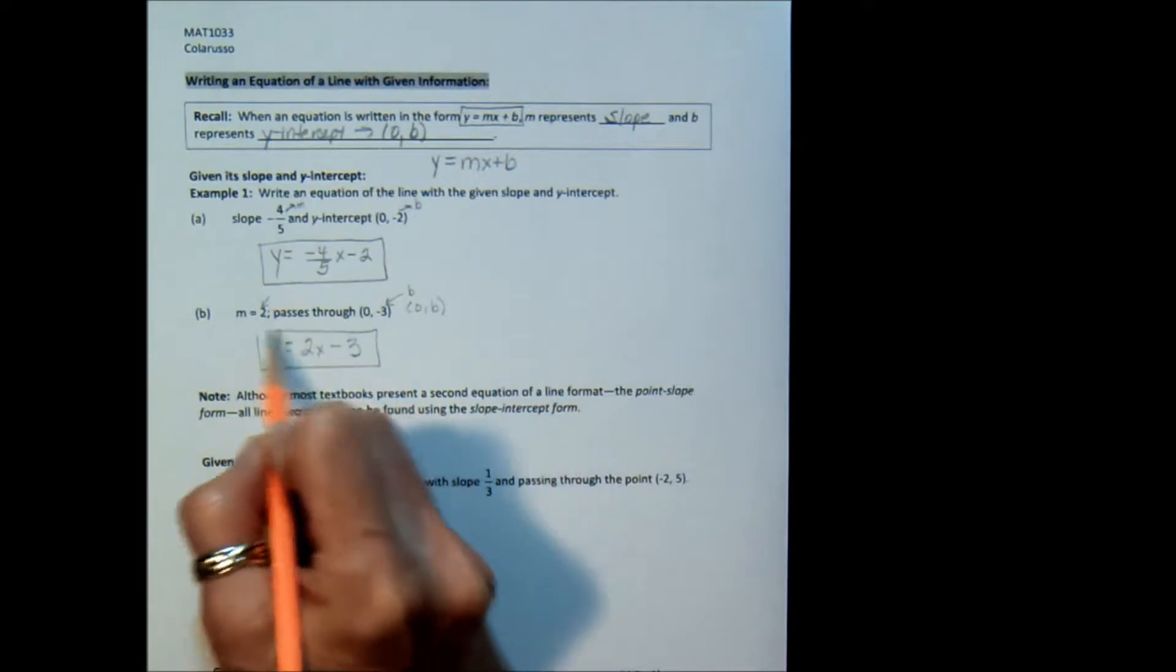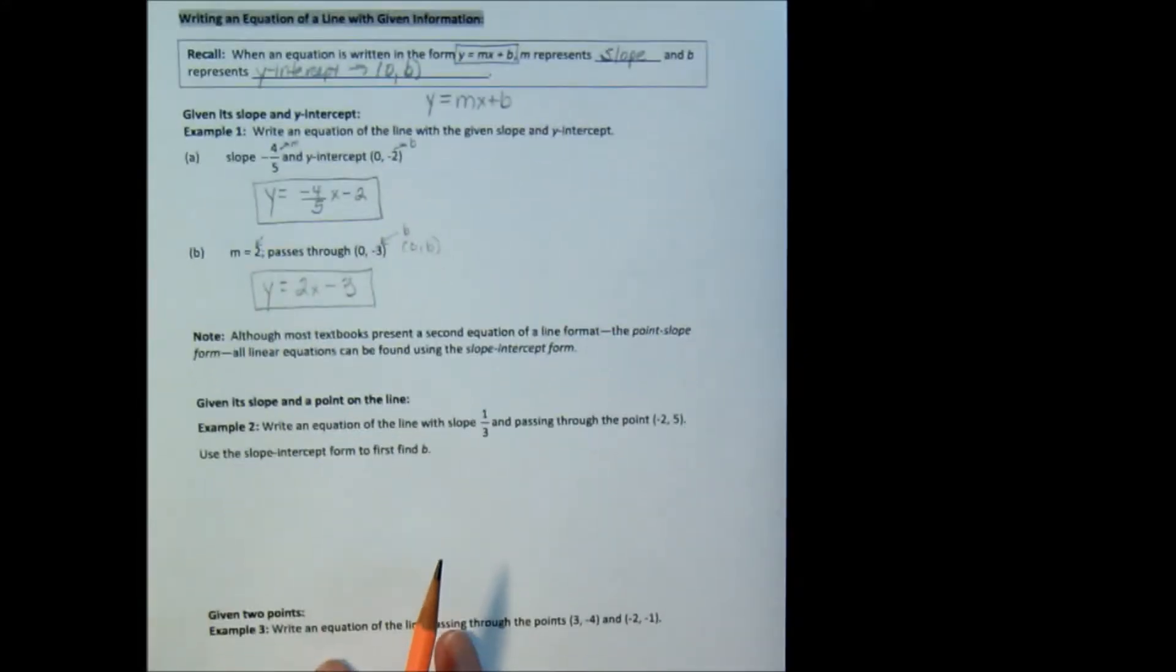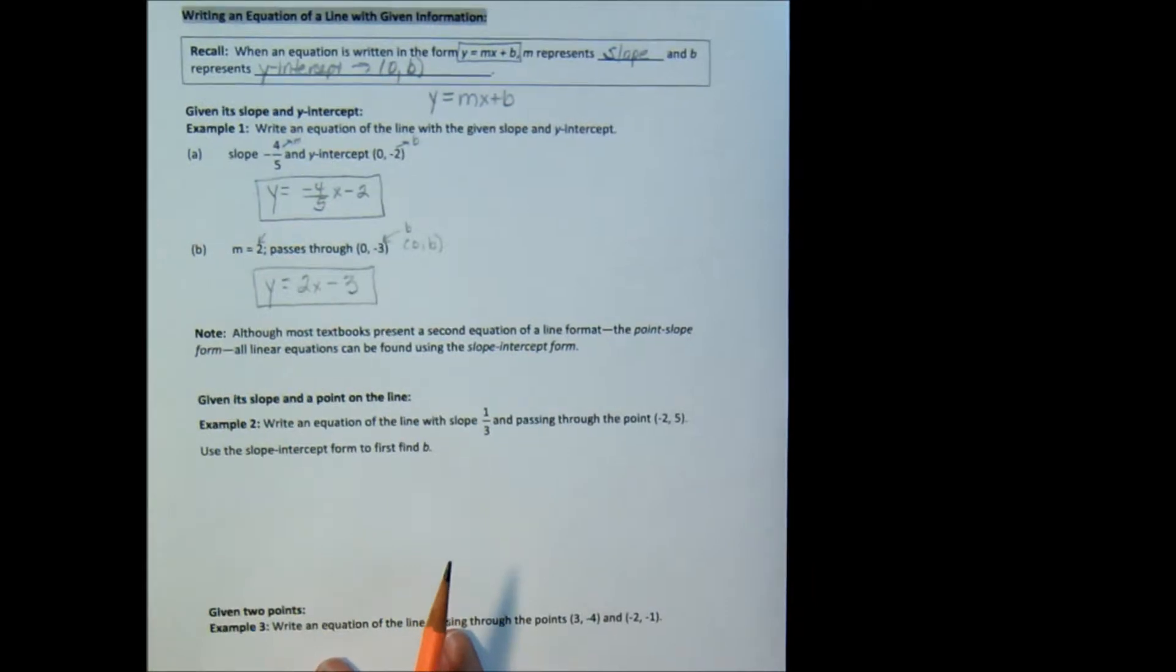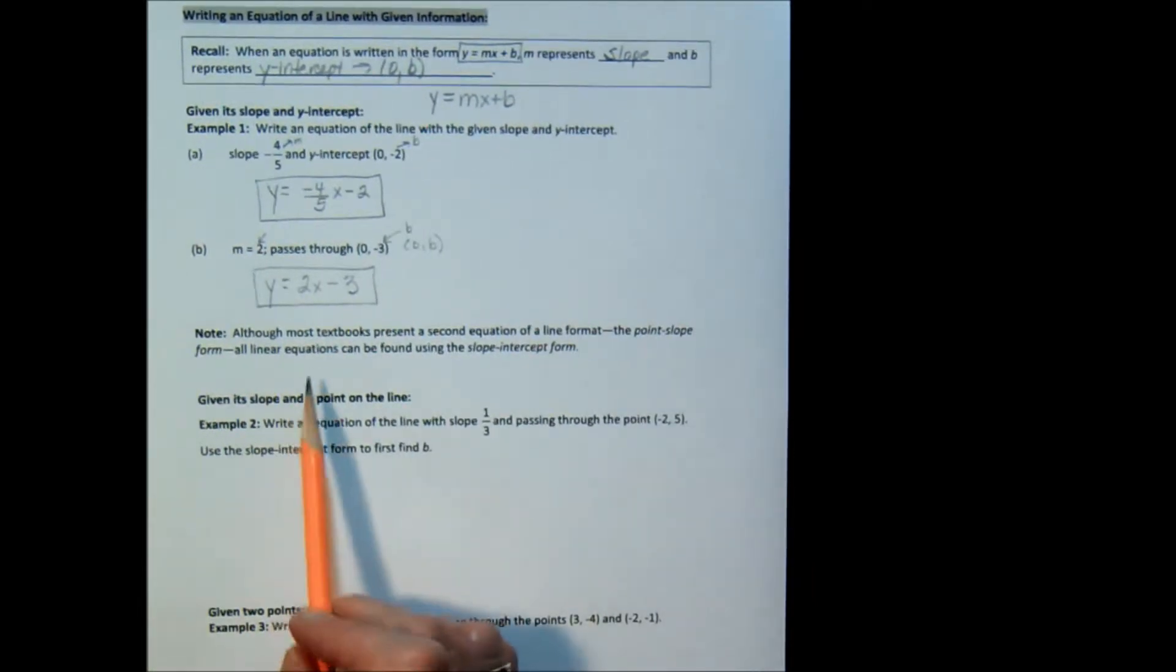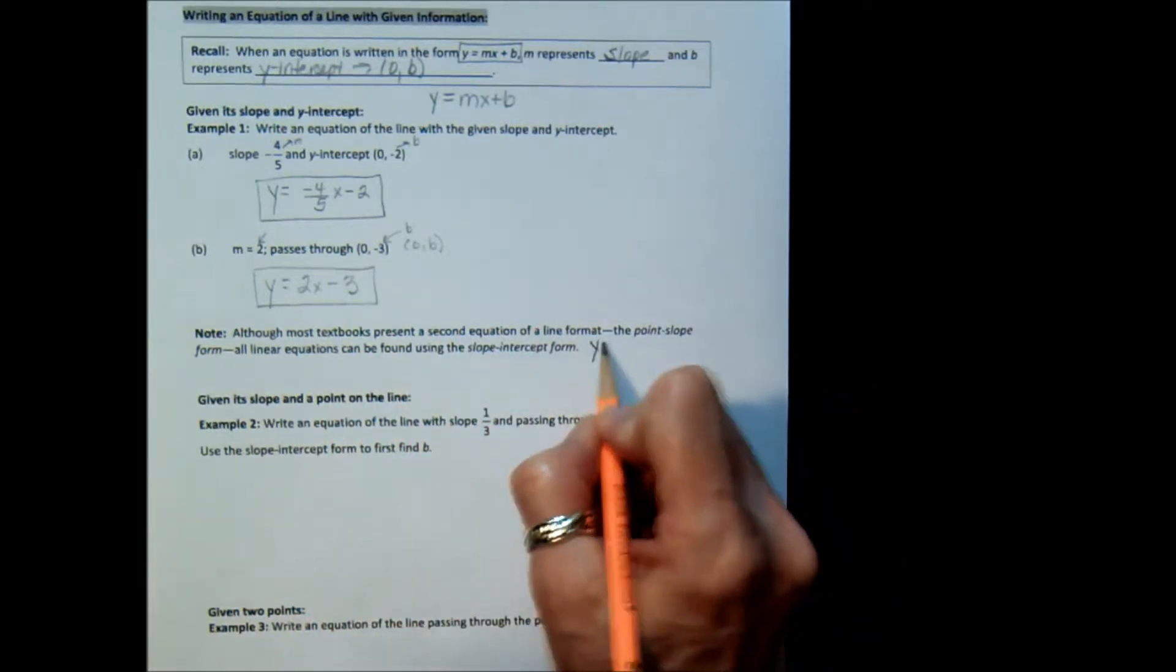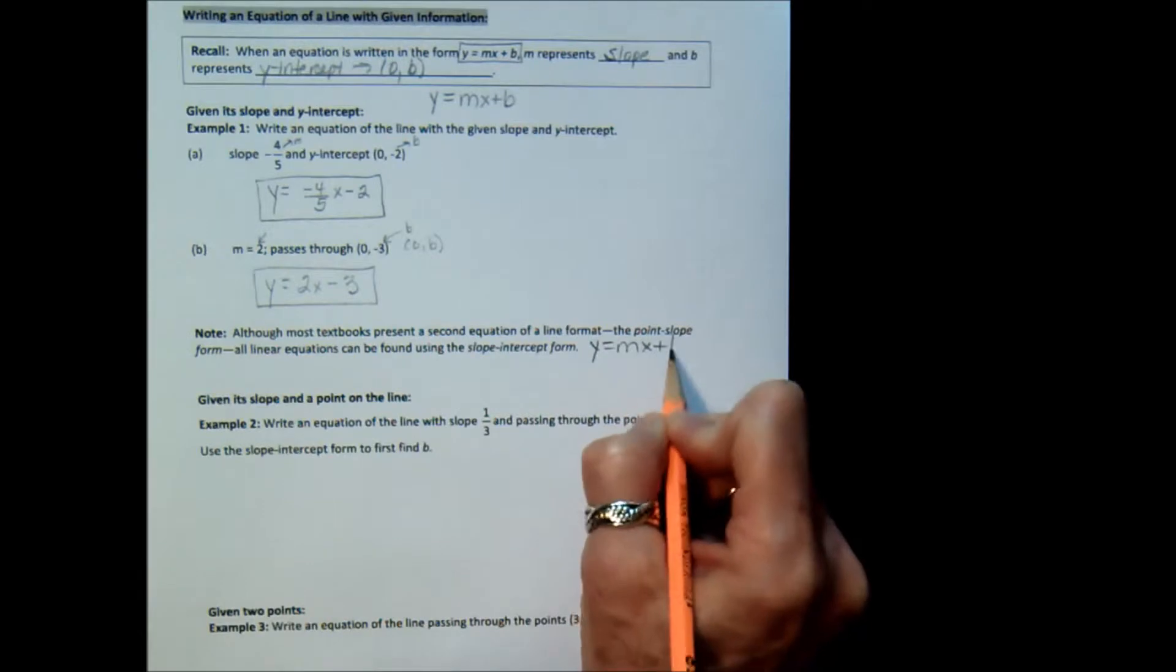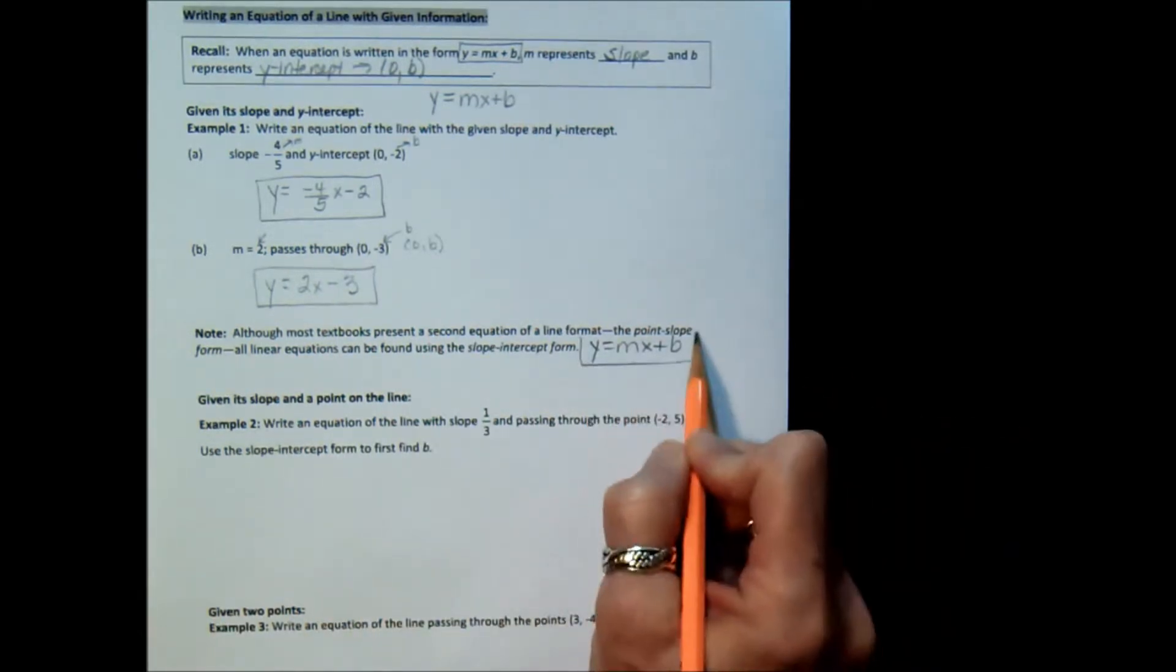Now, there's a note here. It says, although most textbooks present a second equation of the line format, which is called the point-slope form, all linear equations can be found using the slope-intercept form, which is y equals mx plus b. And that's what this lesson is going to do, is to teach you how to use just this form.